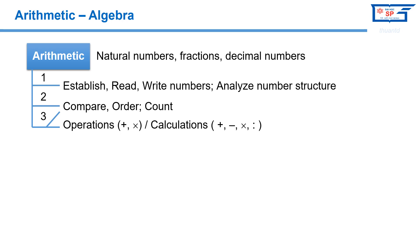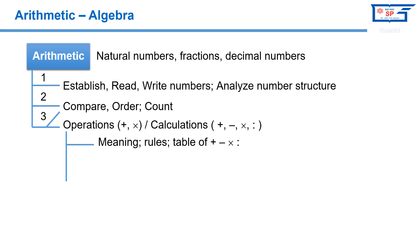Moreover, we can find the addition operation corresponding to a given subtraction operation, and the multiplication operation corresponding to a given division operation. Performing the division operation for the fraction A over B is equivalent to performing the multiplication operation by B over A, the reciprocal fraction, or the inverse element of A over B. Students need to understand the meaning of mathematical operations to choose the appropriate operation for a situation. The addition, subtraction, multiplication, and division tables are calculation rules that students need to memorize to perform quick calculations.